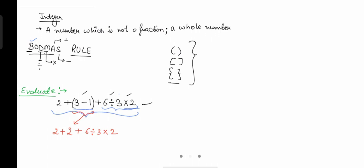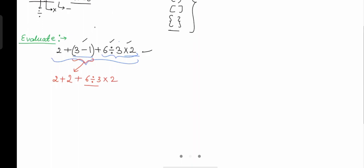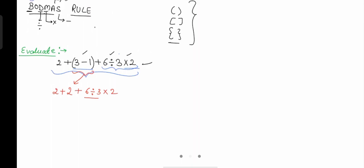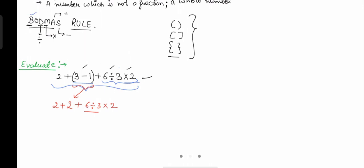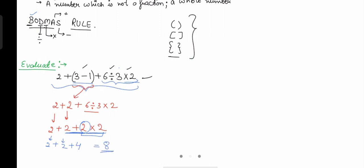Now in the second step we solve the division according to BODMAS. Six divided by three equals two, so this comes up as two. The plus sign remains as it is, and then we have multiply by two. Now there is both addition and multiplication involving this two. According to BODMAS, we multiply first: two multiplied by two equals four. So now we have two plus two plus four.